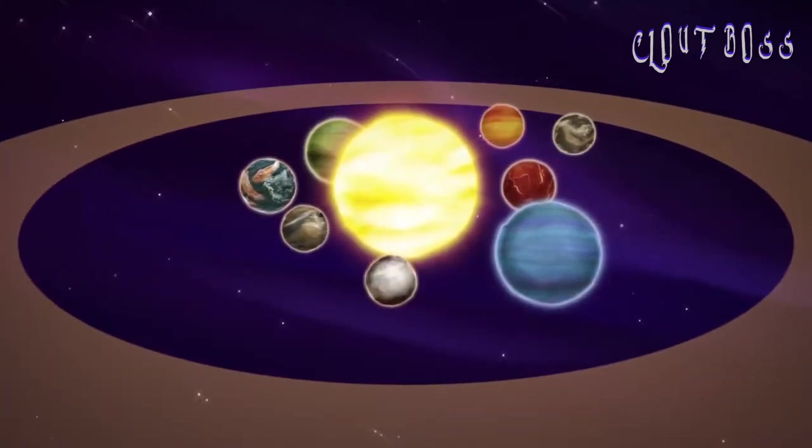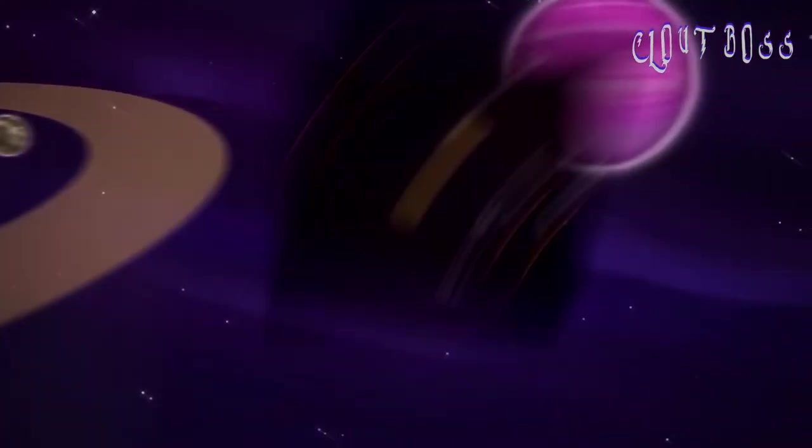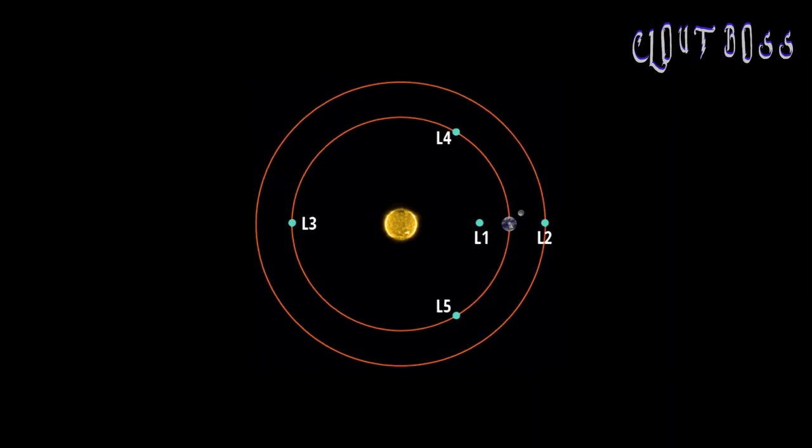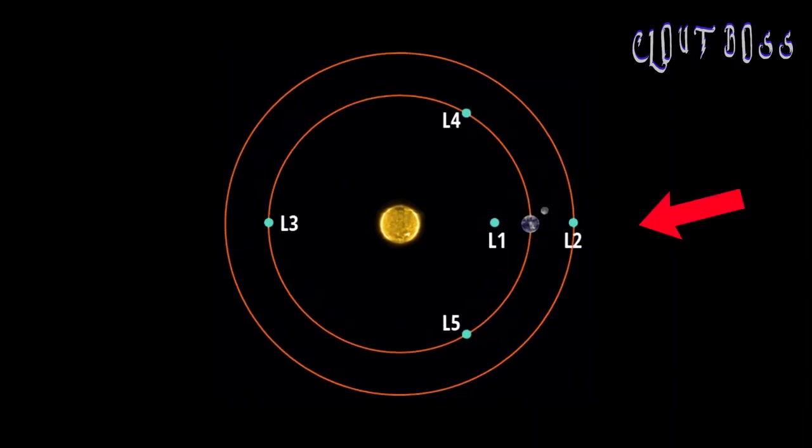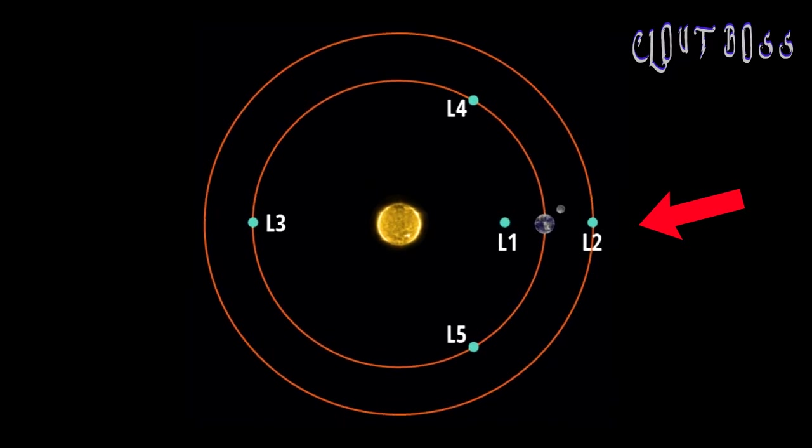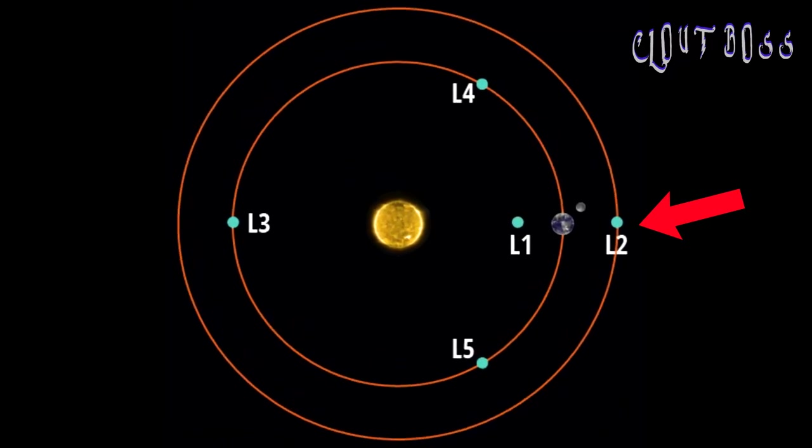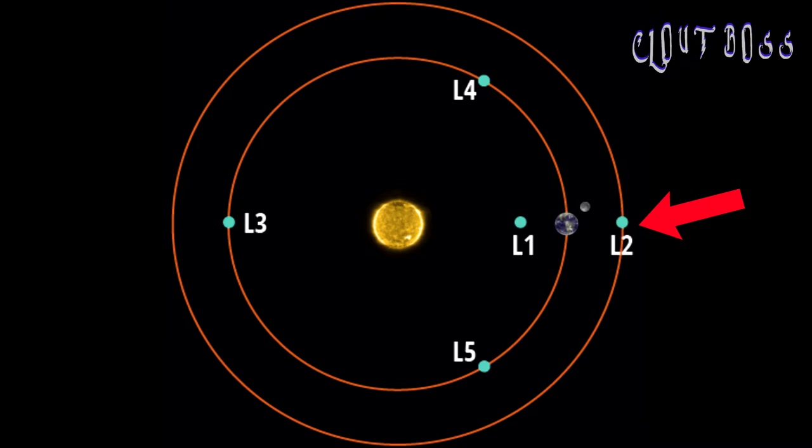Where will the JSWT observe from? It will take the telescope around 29 days to reach its destination, 1,500,000 kilometers from Earth at Lagrange Point 2, also called L2. This distance is a special location that lets JWST stay in line with the Earth as it moves around the sun.